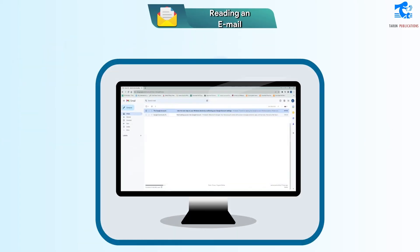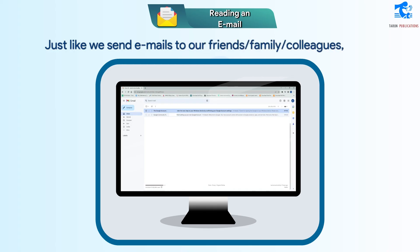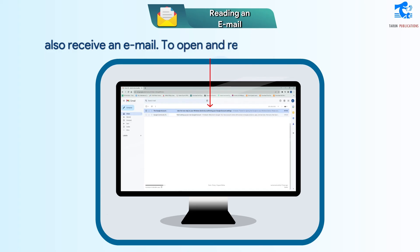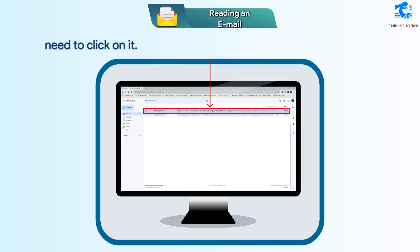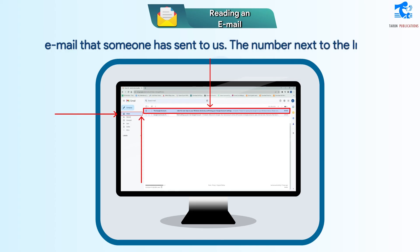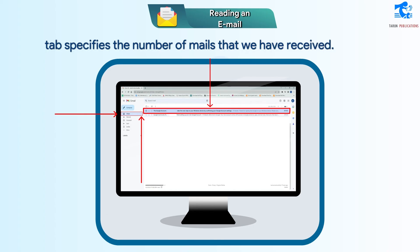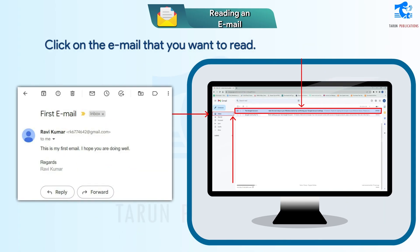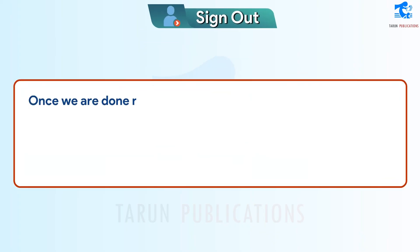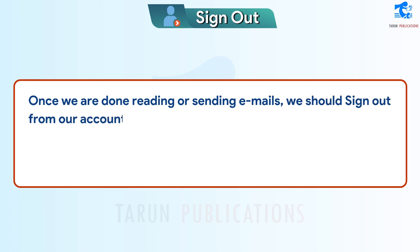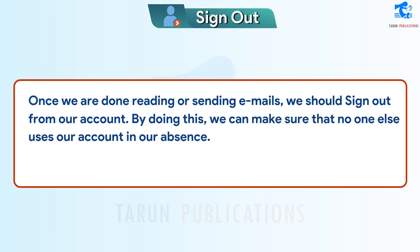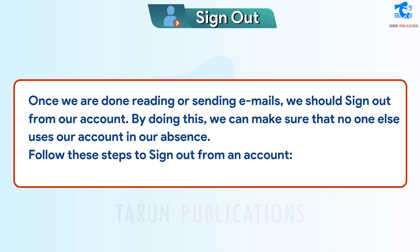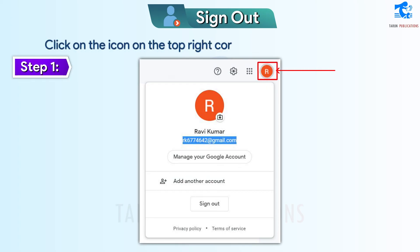Reading an email. Just like we send emails to our friends, family, and colleagues, we can also receive emails. To open and read an email, we simply need to click on it. When we click on the Inbox tab, we will find emails that someone has sent to us. The number next to the Inbox tab specifies the number of mails received. Click on the email that you want to read. Sign out: Once we are done reading or sending emails, we should sign out from our account. By doing this, we can make sure that no one else uses our account in our absence. Step 1 – Click on the icon on the top right corner of the screen. Step 2 – Click on the Sign Out button.